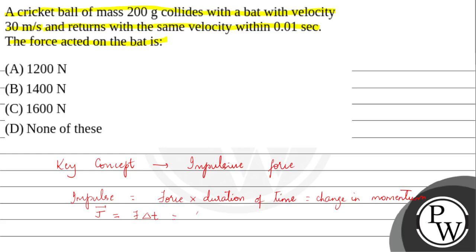And that is equal to delta P. Delta P can be written as final momentum minus initial momentum. So J is also given as F delta T, which is also equal to final momentum minus initial momentum.